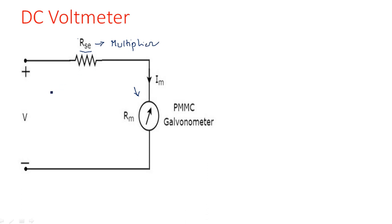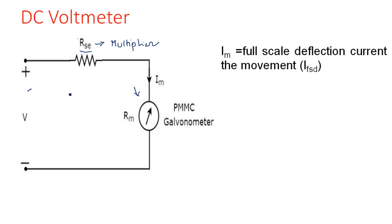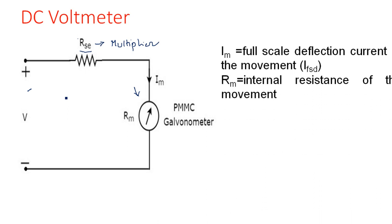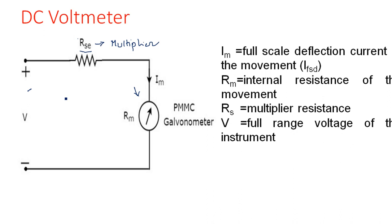This is the unknown input voltage we are applying between the two terminals. IM is the meter current or full scale deflection current — IFSD. The internal resistance of the meter, RM, is the internal resistance. RS is the multiplier resistance, and V is the full range voltage of the instrument.